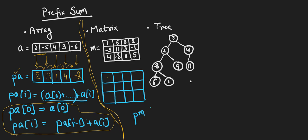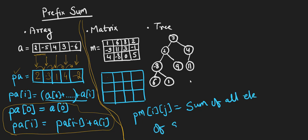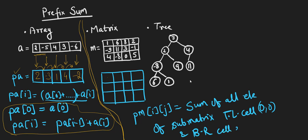Prefix sum of matrix at any cell (i, j) is defined as the sum of all elements of the sub-matrix that starts with top-left cell at (0,0) and bottom-right cell at (i,j). So if we want to fill the prefix sum at any cell, it should essentially be the sum of all elements in that sub-matrix from (0,0) to (i,j).